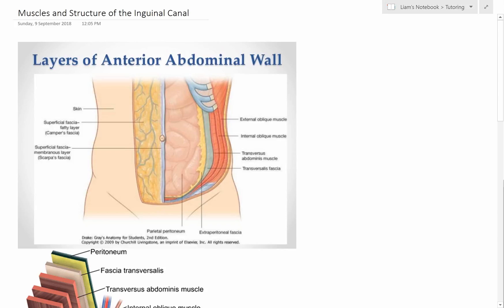Hey guys, welcome back. Today we're going to do the first of three videos looking at the structures of the abdominal wall and then the inguinal canal. The next video will be on the descent of the testes through the inguinal canal, and the final video will cover the medical implications in terms of direct and indirect hernias.